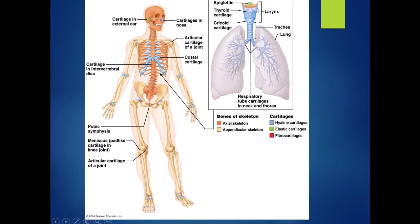Hyaline cartilage is the most abundant of our cartilages. It is our costal cartilage connecting our ribs to our sternum, the nasal cartilage of our external nose, our respiratory cartilage keeping our airways open in the trachea and bronchi, and it makes up the larynx apparatus for speech. Because hyaline cartilage has a glassy feel to it, it is also the articular cartilage found in all of our joints, covering the surfaces of bones that make joints.